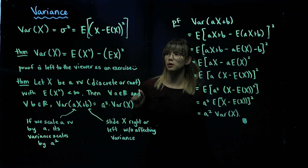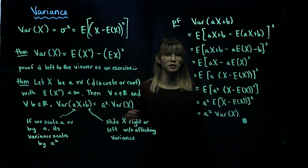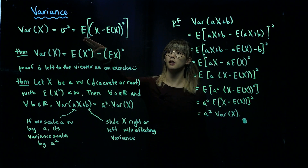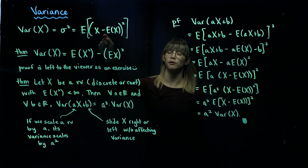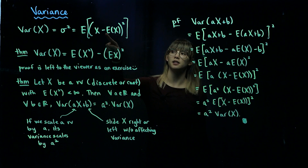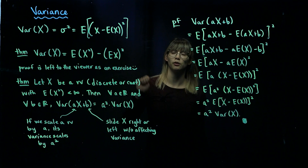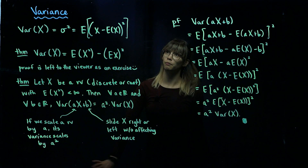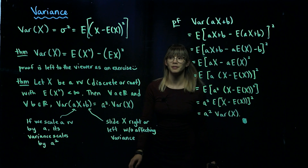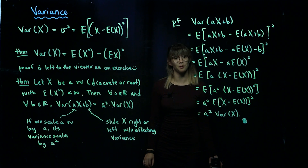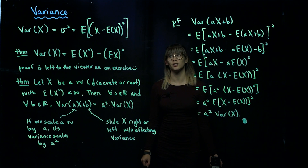You might be wondering how to actually calculate this. Luckily, we talked about functions of random variables in a previous video. This is simply a function of a random variable, so our function G of X is equal to the square of X minus the expected value of X.